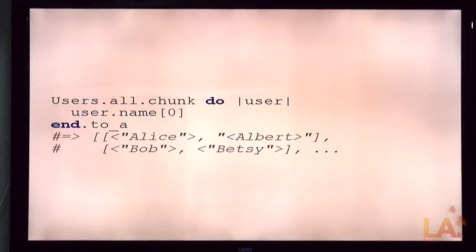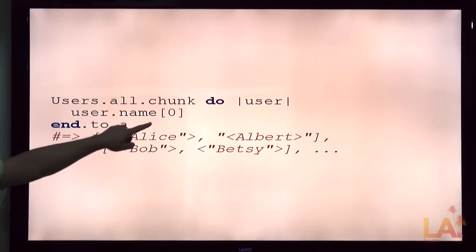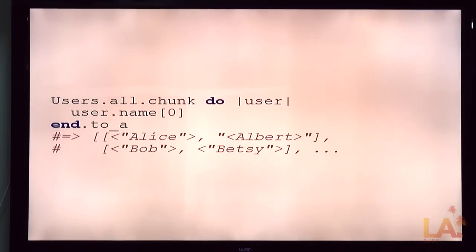There's also a couple of grouping methods that don't make sense without understanding enumerators. Chunk groups consecutive values for which the block returns the same value. Does that make sense? So we get back a list of all the users and they're, I'm just saying, they're sorted by name order. The block says take the first character of their name. That's what we're going to group them by.